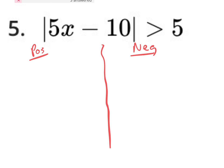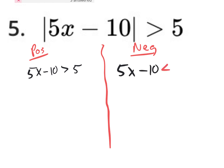The positive situation is writing it exactly the way it is without the absolute values — so 5x minus 10 is greater than 5. The negative situation is the same thing, 5x minus 10, but we flip the inequality and change the sign of the right side. So we rewrite it as 5x minus 10 is less than negative 5.